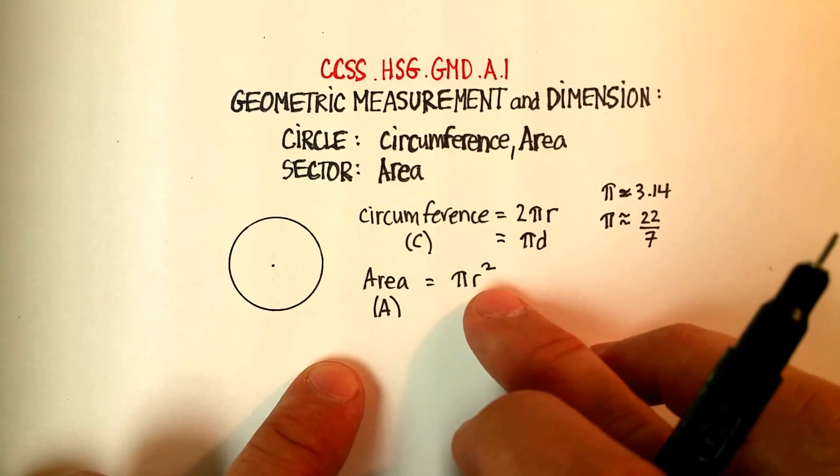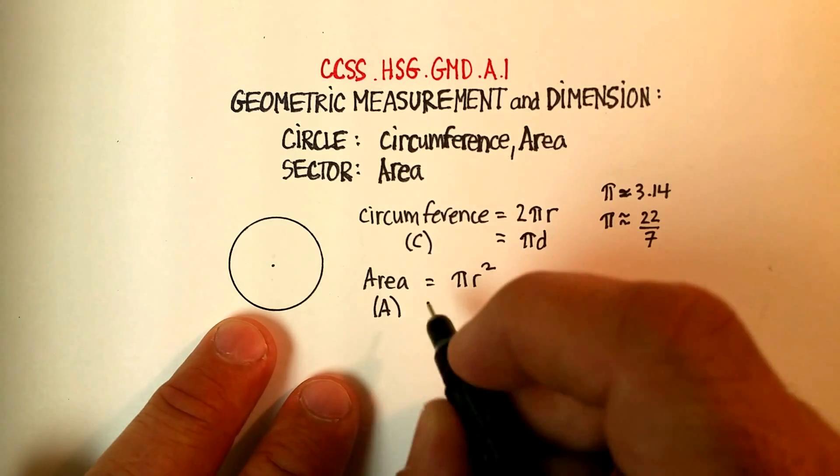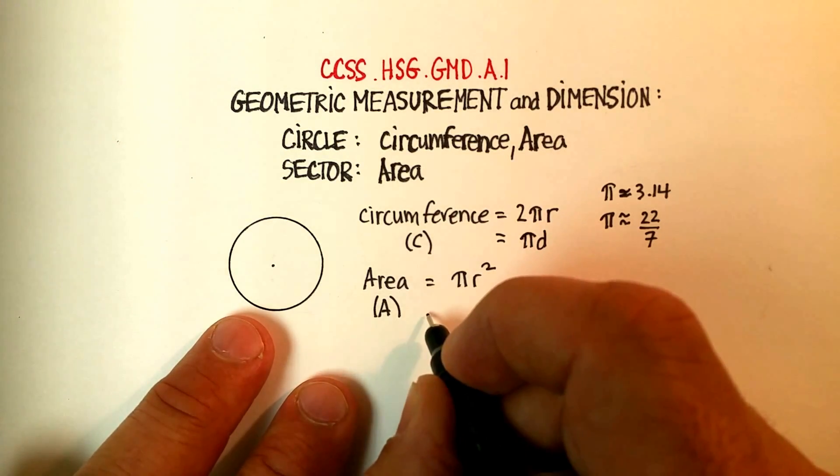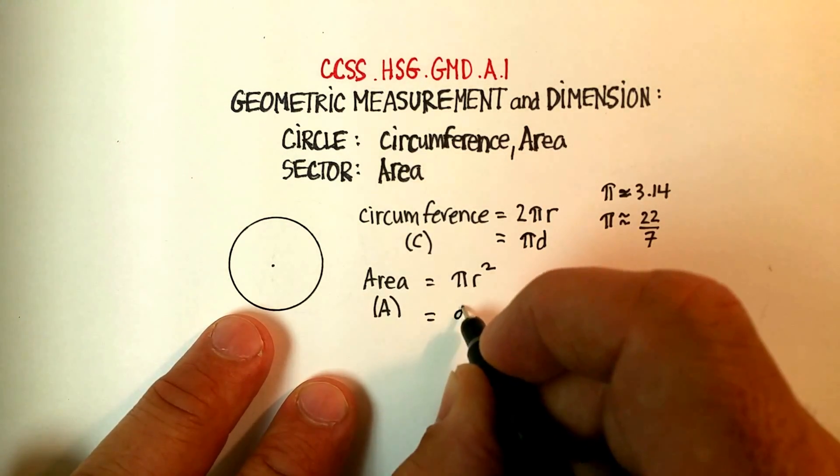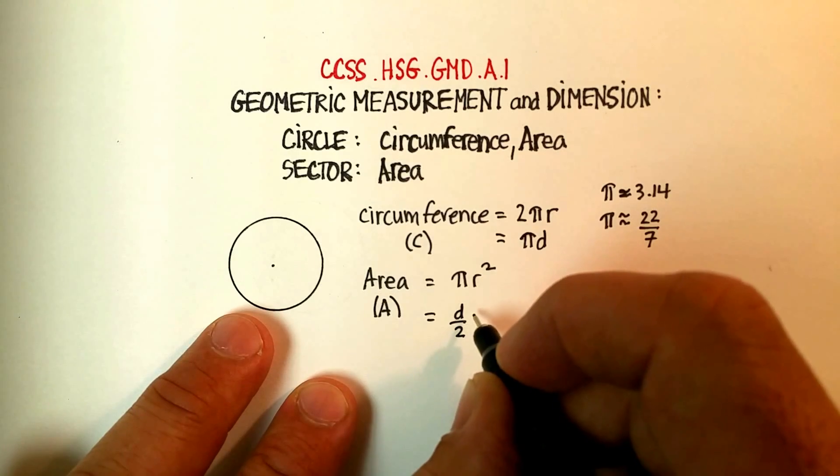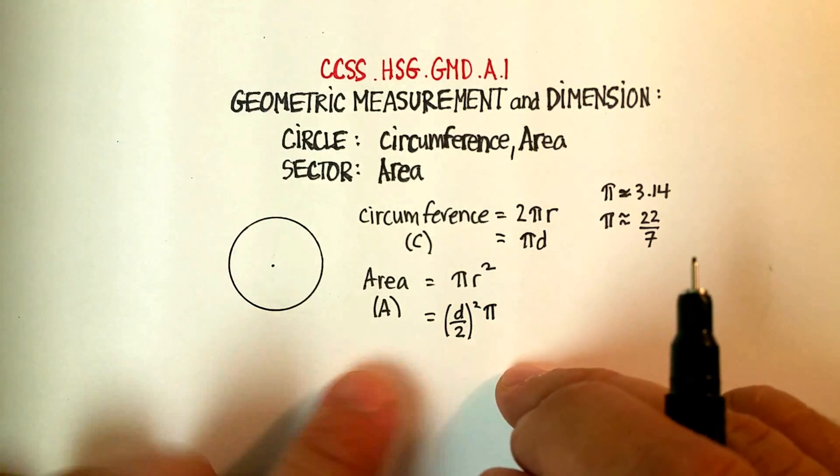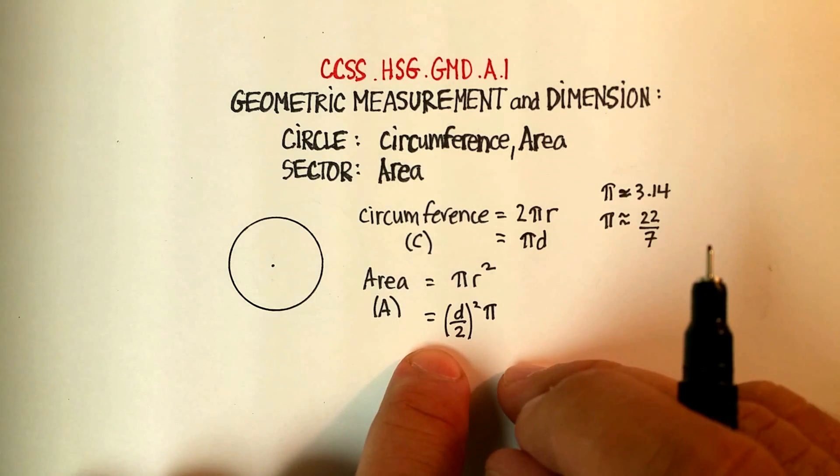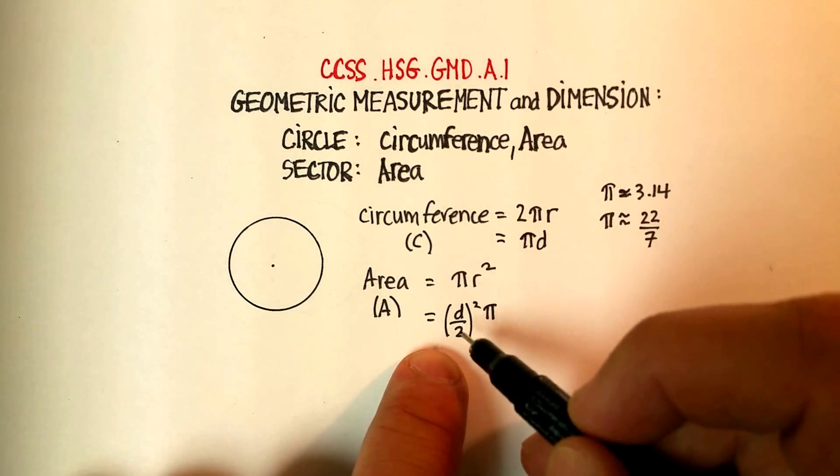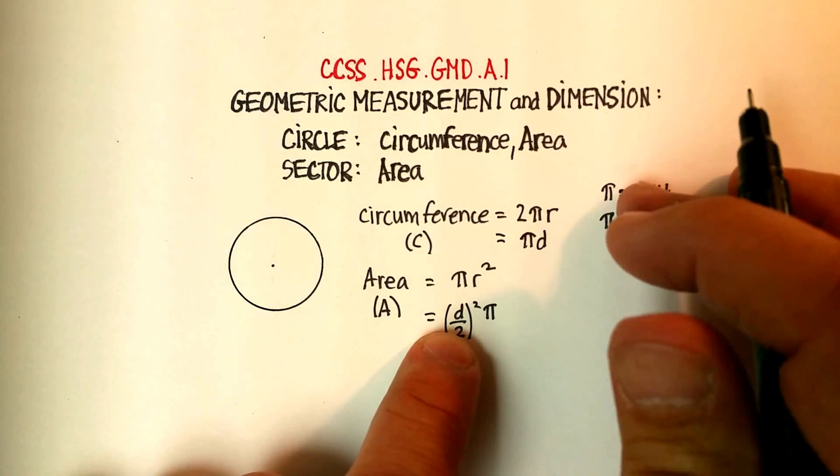The area of circle, again, πr², or what you see very less common would just be diameter divided by 2 quantity squared times pi, not very common at all, because just diameter divided by 2 would be radius, and then radius times that.